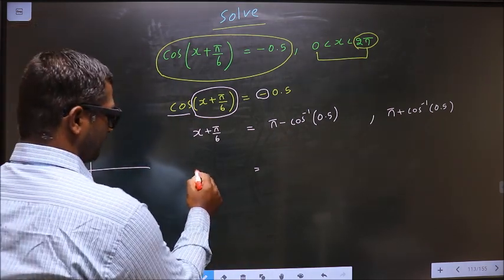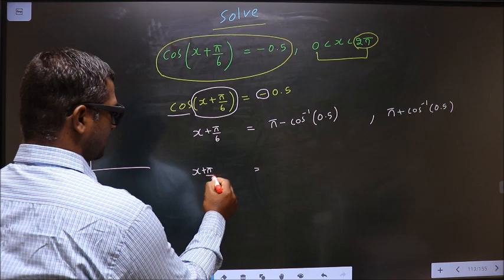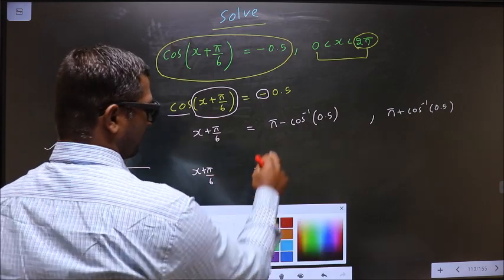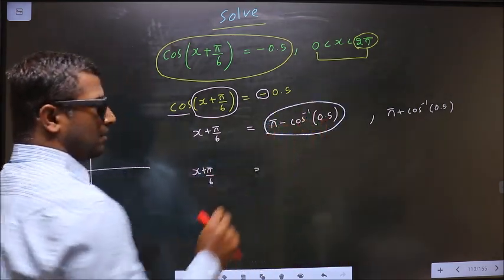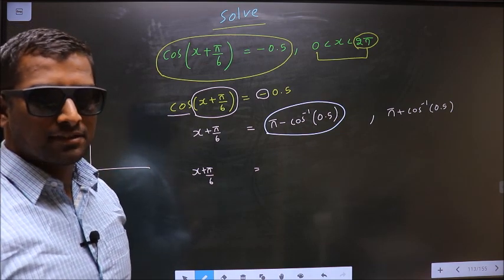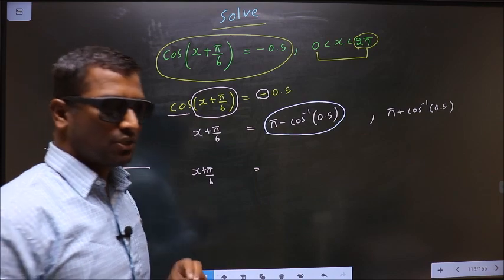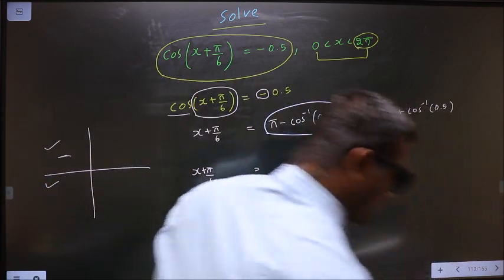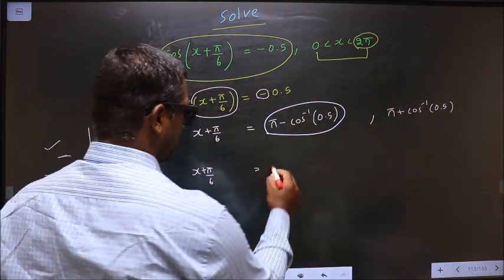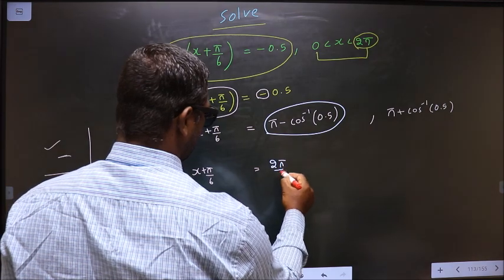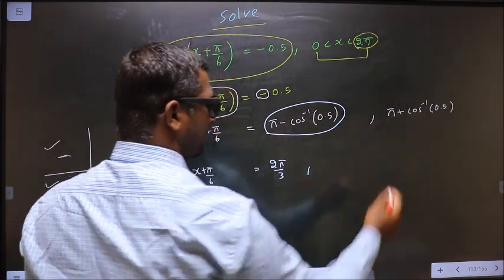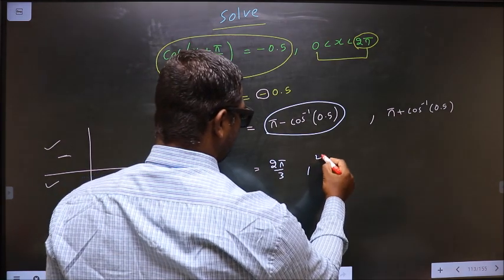Now x + π/6 equals... Make sure your calculator is in radians mode. And now you calculate this. You should get 2π/3. Calculate this. You should get 4π/3.